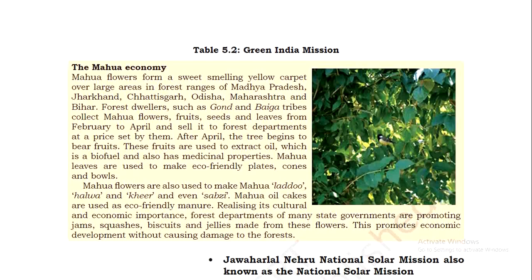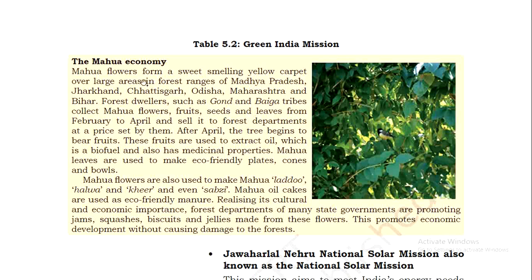An example of a green economy project for forests is the Mahua economy. Mahua flowers form a sweet-smelling yellow carpet over large areas in the forest ranges of Madhya Pradesh, Jharkhand, Chhattisgarh, Odisha, Maharashtra, and Bihar. Forest dwellers such as Gond and Baiga tribes collect Mahua flowers, fruit, seeds, and leaves from February to April and sell them to the forest department at a price set by them.